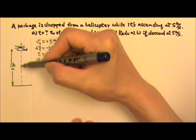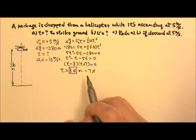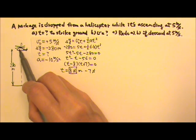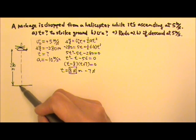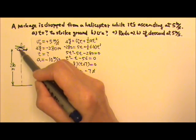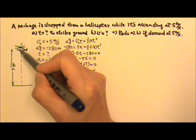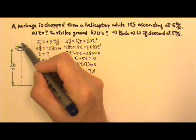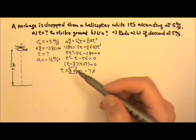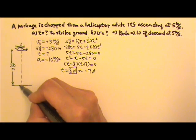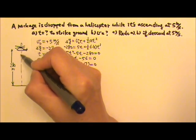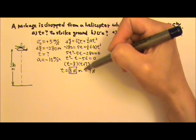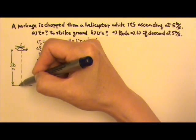Our answer is the positive one — 8 seconds. So it takes the package 8 seconds to hit the ground. The negative 7 seconds is actually also a meaningful number. If this package started from lower down, getting shot straight up, it would take 7 seconds to reach the release point. So if T equals 0 is the release, then negative 7 seconds is when the package was back there.